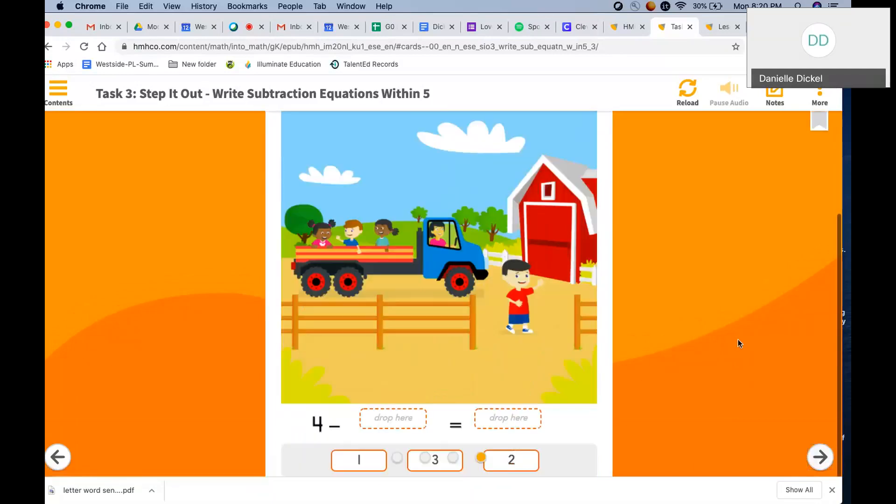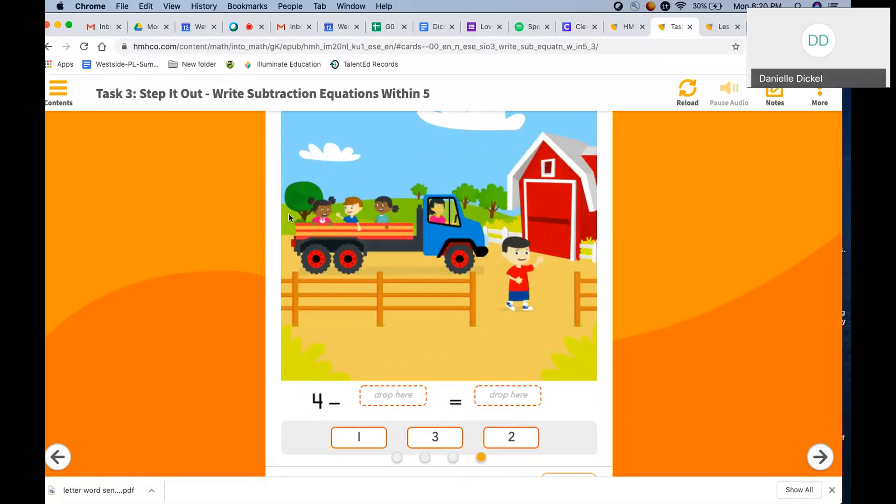So our math equation. We had four friends on the hayride. How many friends left? One. One friend left. How many are left on the hayride? One, two, three. There are three left. Four minus one equals three.